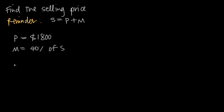We're going to say S is equal to — we don't know S because S is the selling price and that's what we're trying to find — is equal to the purchase price. We know that the business bought the item for eighteen hundred dollars, so we plug in eighteen hundred for P. And then we know that the markup is forty percent of the selling price, which equals point four times S, so we say plus zero point four times S.